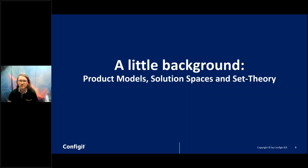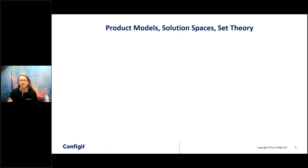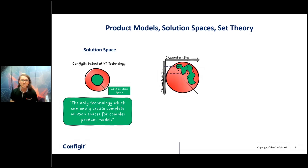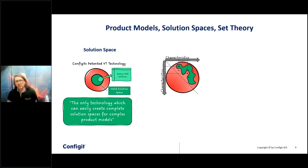A little background so we all speak the same language. If you think about the product model, you can take all the characteristics and create a matrix defining which combinations are combinable and which are not allowed. What you get is a theoretical possible solution space of all your combinations, and a valid green solution space — the options you can build, offer, and sell on the market. That's what our VT technology does: we take all your characteristics and rules, compile the valid solution space, and produce all possible combinations in your product model.